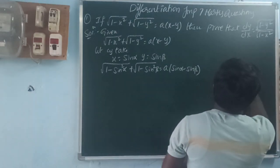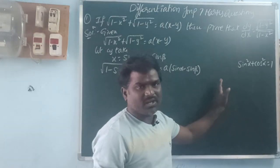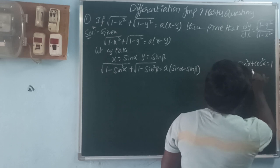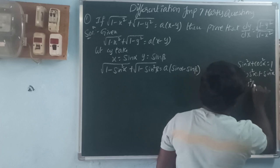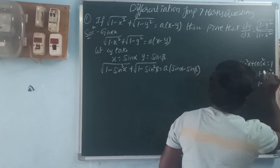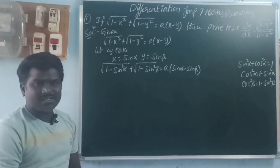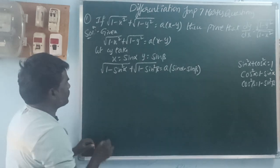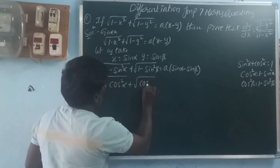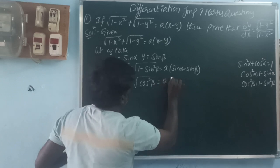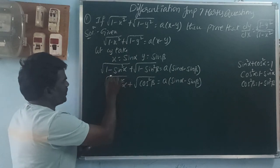Using the trigonometric identity sin²α + cos²α = 1, we get 1 - sin²α = cos²α, and similarly 1 - sin²β = cos²β. So in place of 1 - sin²α we write cos²α, and in place of 1 - sin²β we write cos²β. Therefore √(cos²α) + √(cos²β) = a(sin α - sin β).